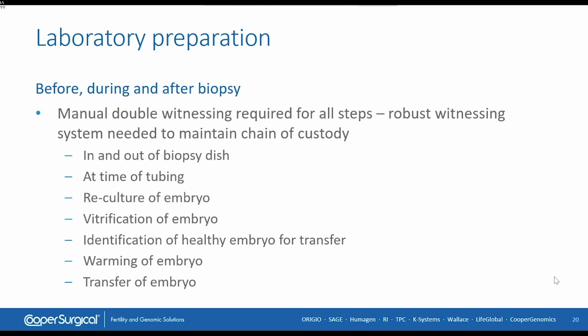The manual double witnessing system is mandatory and is needed at all steps. It needs to be robust and maintain the chain of custody. These steps include in and out of the biopsy dish, movement of embryos, time of tubing, reculturing of the embryo, time of vitrification, identification of the healthy embryo for transfer, as well as at the time of warming and transfer of the embryo.